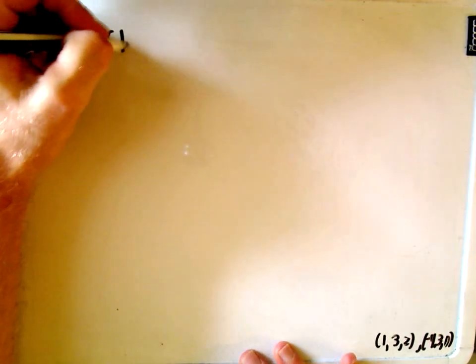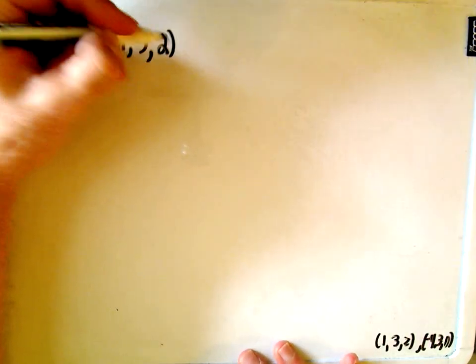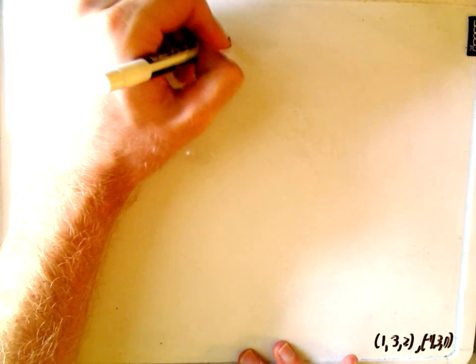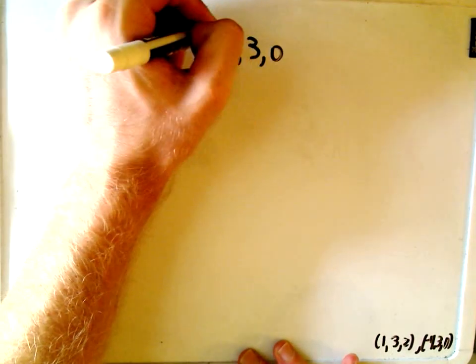Okay, so let's do our other problem here real quick. So now we simply want the vector that goes through the point (1, 3, 2) and (-4, 3, 0).